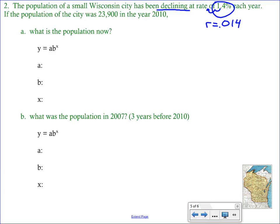When we need to calculate b, because it is declining, we are looking at decay, we are going to do 1 minus r. So 1 minus 0.014, which gives us 0.986. So that is our multiplier. If we read the next sentence, it says the population of the city was 23,900 in the year 2010, and then we have two different questions we're going to answer here. So let's focus on part A first. Part A asks us, what is the population now? So our starting amount is going to be from that year 2010, so we had 23,900 people in 2010.